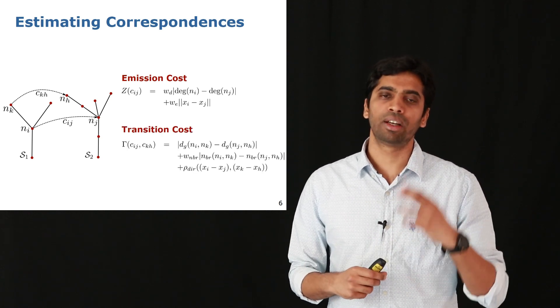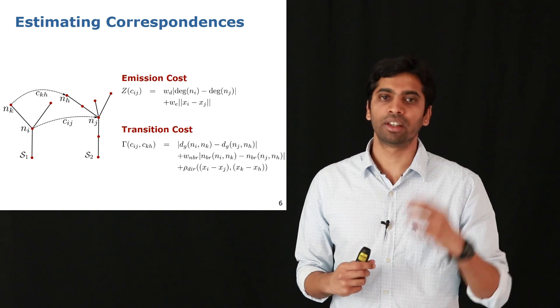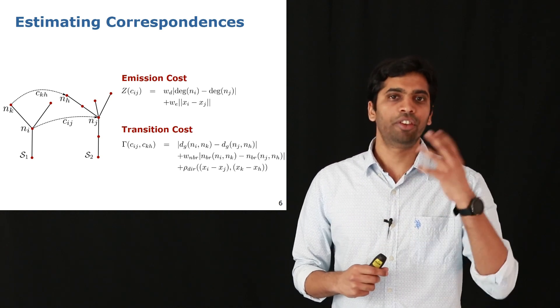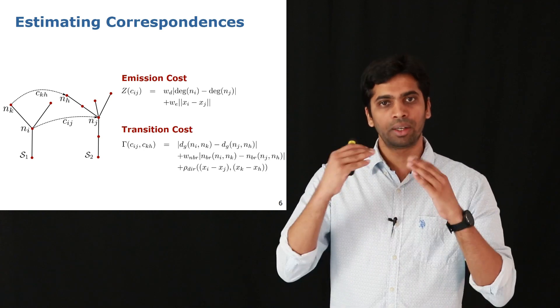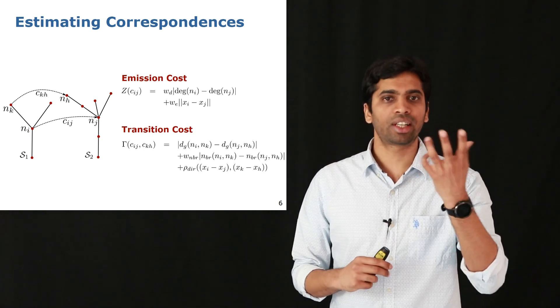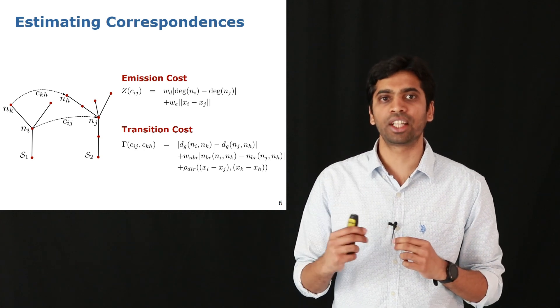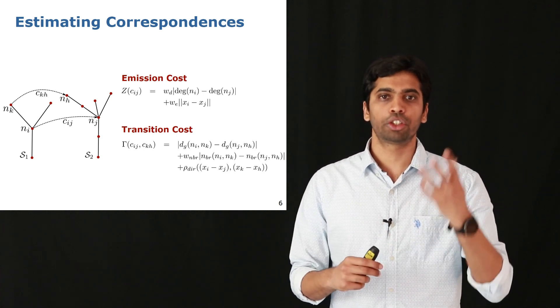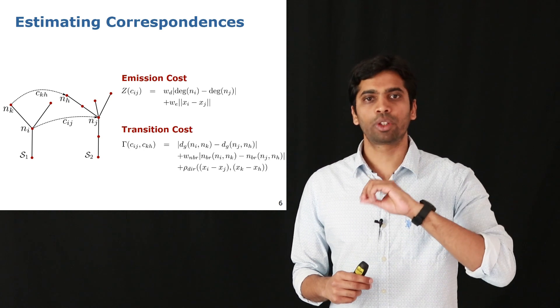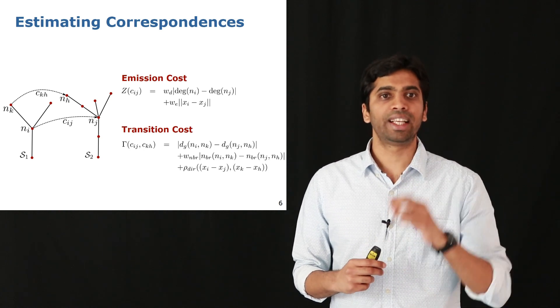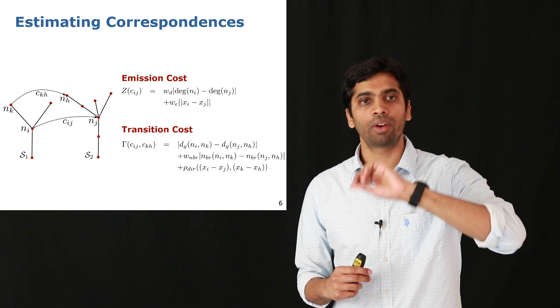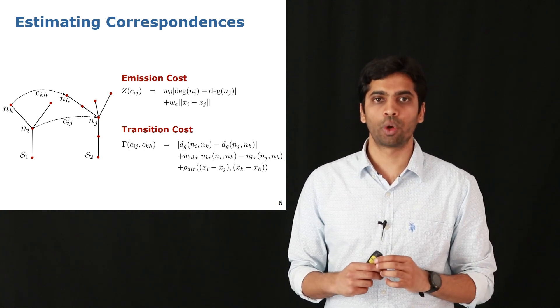Second, we propose a transition cost which depends on three terms. The transition cost is defined for a pair of correspondences, shown by Cij and Ckh. For this pair, one of the costs we compute is the skeletal distance, or the distance along the skeleton between these two nodes.